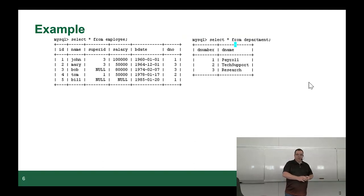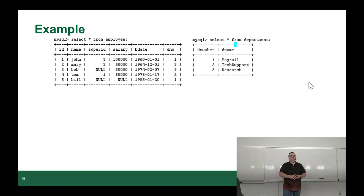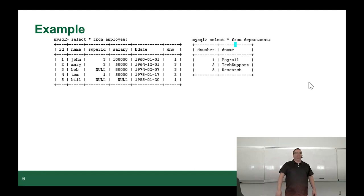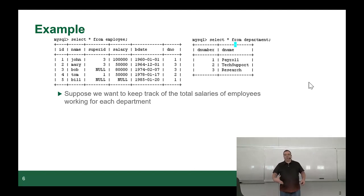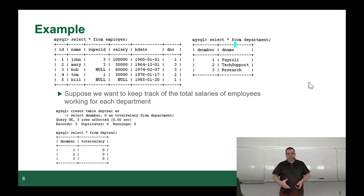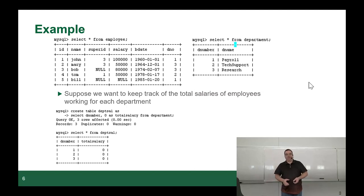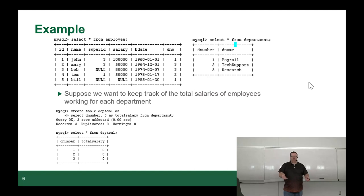We have examples with two tables: an employee table and a department table. Employees are associated to a department number, have a salary and a few other pieces of info. The departments table has a department number and the department name. If we want to keep track of total salaries for employees per department, we can create the equivalent of a materialized view — a table showing department number and default department salary, created with a select statement grabbing distinct department numbers defaulting to zero.